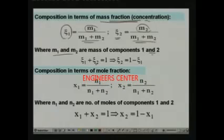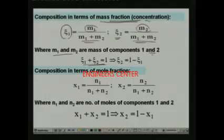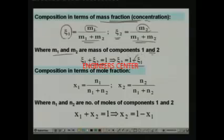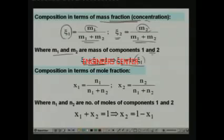For a binary system, you can easily show that psi_1 plus psi_2 equals 1 from the above expressions. That means psi_2 equals 1 minus psi_1. So if you know the composition of one component, the composition of the other component can be easily obtained.